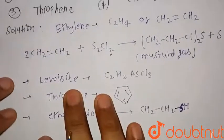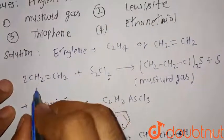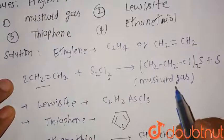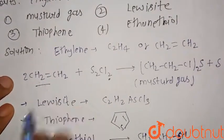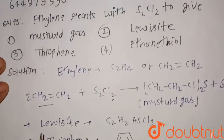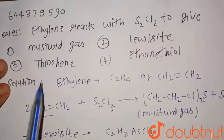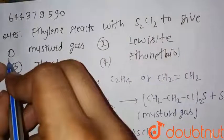So we can clearly see that when ethylene reacts with S2Cl2, there is the formation of mustard gas. So in the first option mustard gas is given, hence option first is the correct choice. Thank you.